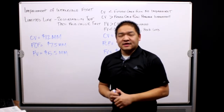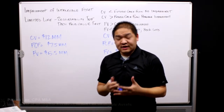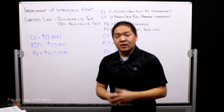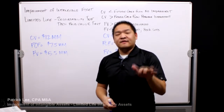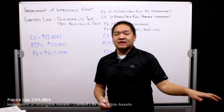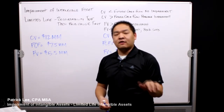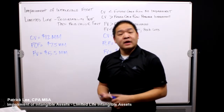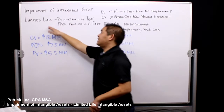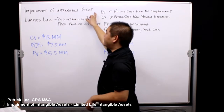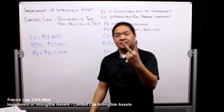In this lesson we're going to go over impairment, specifically an example of a limited life intangible asset and testing that intangible asset for impairment. If we have a limited life intangible asset and we want to review it for impairment, we have two steps.